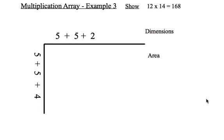We can go to even smaller divisions. If I break the 12 up into 5 plus 5 plus 2 and the 14 into 5 plus 5 plus 4, I have more areas to calculate, but the numbers are smaller and a little easier to do.